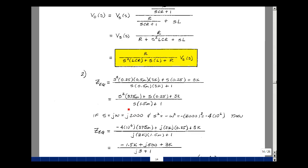Cleaning this up, multiplying out gives 375 micro. This is 0.25 and 3k, the product is 1.5 milli. Now evaluating, S equals J2000. For S squared, we have 2 times 10 to the third squared, which is 4 times 10 to the sixth, and J squared is minus 1. Plugging that back in, I get minus 4 times 10 to the sixth times 375 micro, plus J2000 times 0.25 plus 3k, and J2000 times 1.5 milli plus 1.